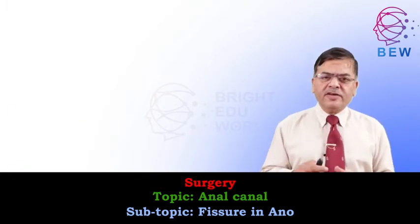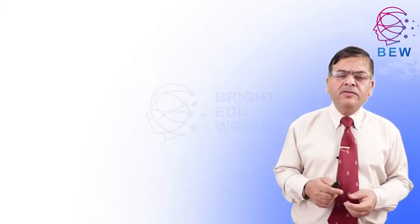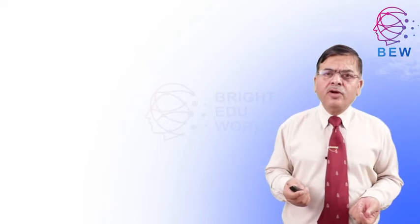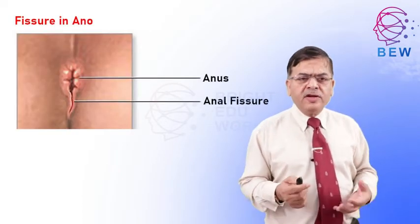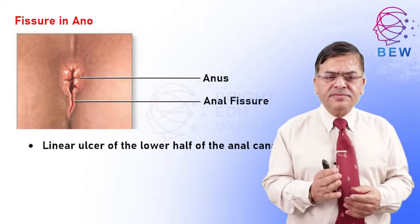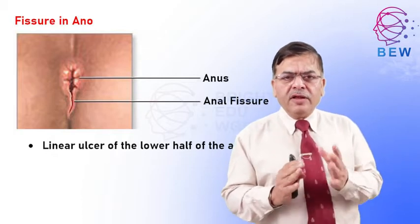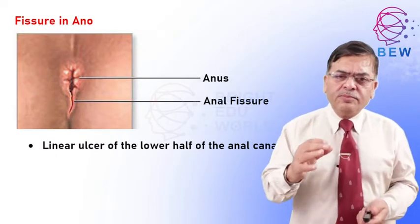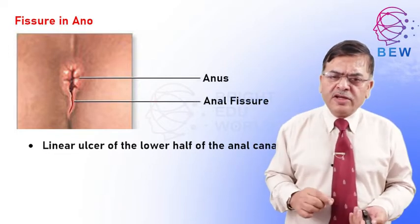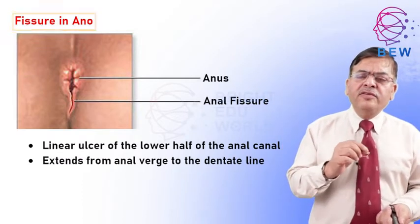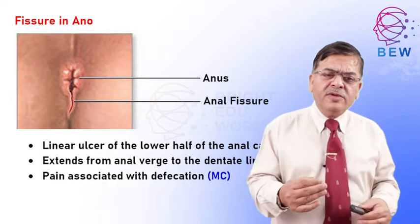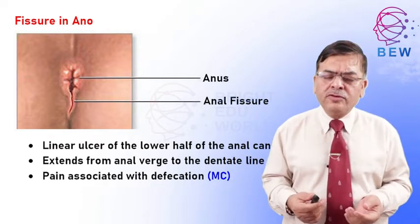We will discuss one condition of the anal canal which is very common. Most of us have suffered with this condition maybe once in a lifetime. The condition is fissure-in-ano. Fissure-in-ano is a linear ulcer in the lower part of the anal canal. Since it is below the dentate line, the area is very sensitive to pain — it is a very painful condition. Pain increases tremendously during defecation and immediately after, then slowly fades away.